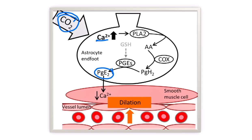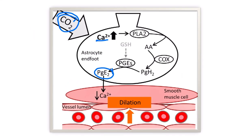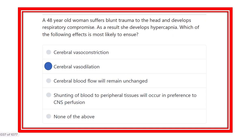In emergency conditions, more blood is needed by the brain. Carbon dioxide increases the diameter of the blood vessels and increases blood flow. So the effect of hypercapnia is cerebral vasodilation — that is the correct answer.